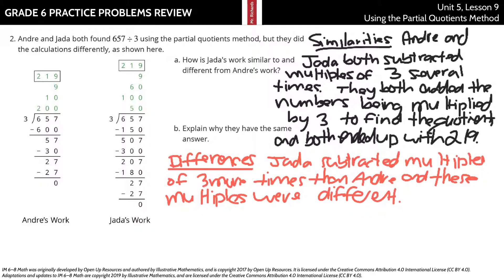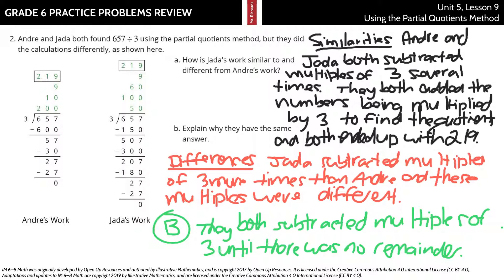Compared to Jada, who got there eventually, did 50, then 100, then 60, so a little bit different method there. Now, why are they the same? They both subtracted multiples of 3 until there was no remainder, and they did so correctly. They took different paths, but they did it correctly.